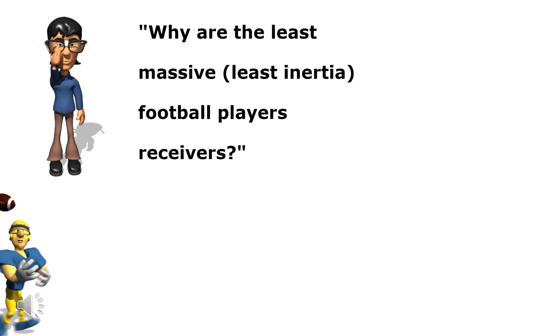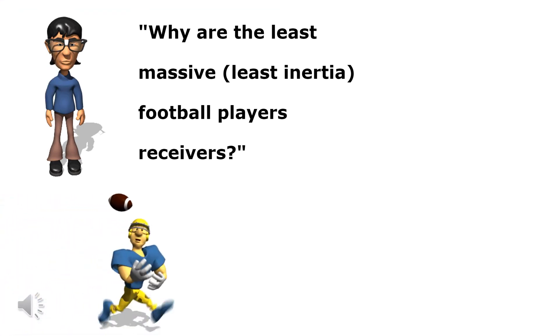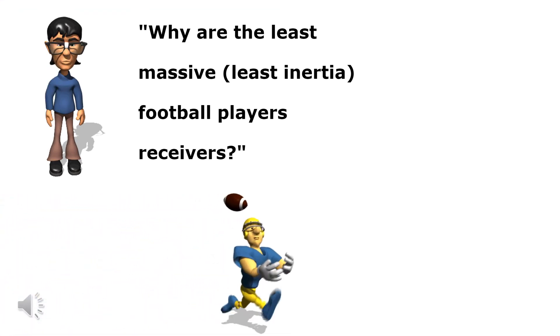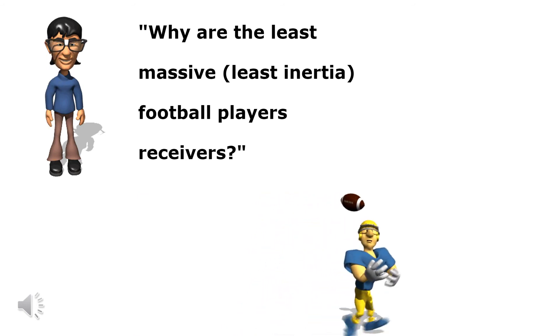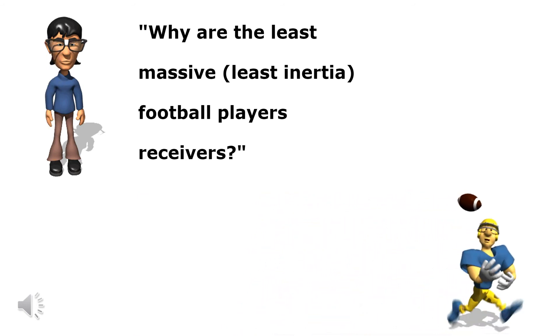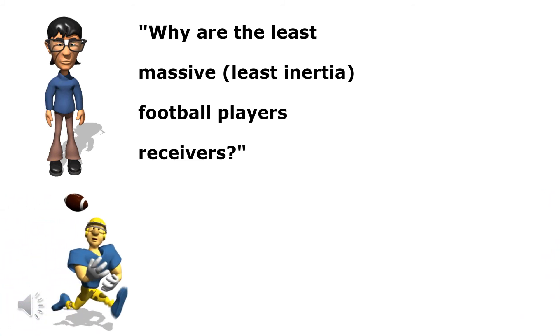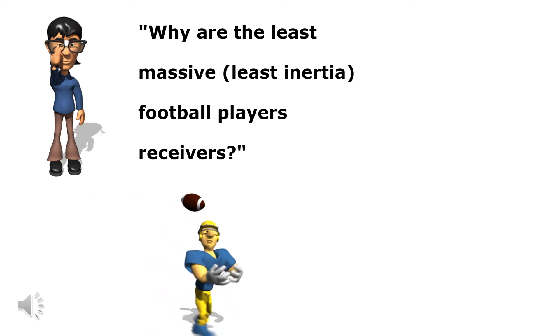Why are the least massive football players receivers? The receivers on a football team tend to have less mass because they attempt to elude the defenders by changing their speed and direction. The less mass you have, the less inertia you have, and the easier it is to change your speed and direction.